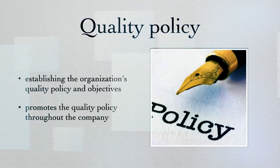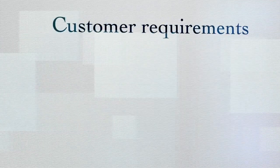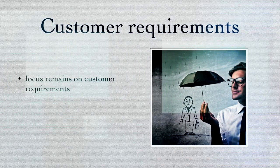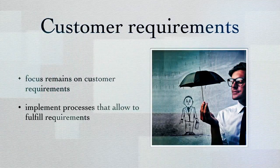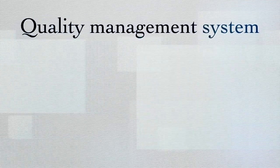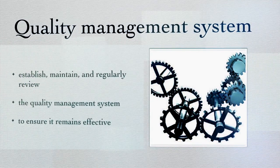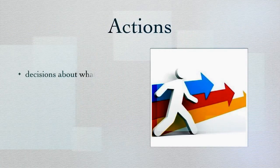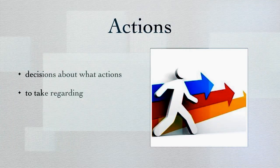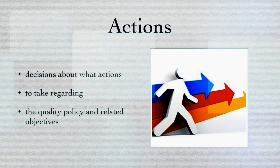Upper management also promotes the quality policy throughout the company so all employees are involved and aware of the policy. They are also responsible for ensuring that the organization's focus remains on customer requirements and implementing processes that allow these requirements to be fulfilled. Another responsibility is to plan, maintain, and regularly review the quality management system to ensure that it remains effective. Upper management should also make sure that the necessary resources are available at all times, and must regularly make decisions about actions regarding quality policies, related objectives, and improving the quality management system.